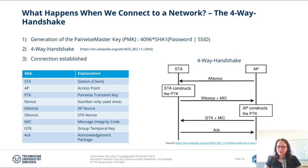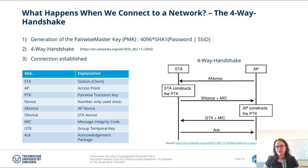For the 4-way handshake, let me introduce some abbreviations. STA is short for station — the client like your smartphone or laptop. AP is the access point. PTK is the pairwise transient key, an intermediate key. A nonce is a number only used once, usually a cryptographic value. The A-nonce is the access point nonce and the S-nonce is the station nonce. MIC is the message integrity code. GTK is the group temporal key, and ACK is an acknowledgement packet.